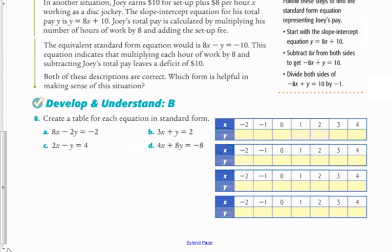These are linear equations — they're just written in a different form. A lot of the ideas you know about linear equations still apply: they go up by a constant rate, if the change in the input is one then the change in the output is the slope, and so on. But the way you work with them is a little bit different. The first thing I'm going to do is teach you how to create a table for an equation like this.